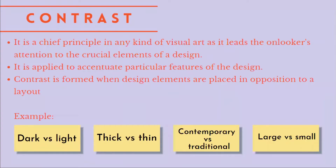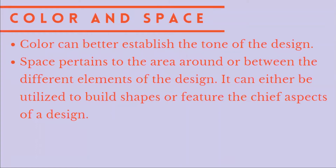Next, contrast. Employing contrast draws distinctions within elements, conclusively emphasizing the essential elements of a design. Contrast is essential for keeping the detail between homogenous elements in a design, thereby heightening a layout's overall clarity. Examples of contrast are dark versus light, thick versus thin, contemporary versus traditional, and large versus small. And the last principle of design is color and space. Graphic designers employ a color palette to choose colors that can form contrast or even work together to complement other elements.